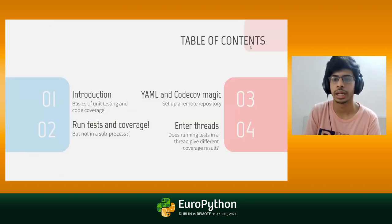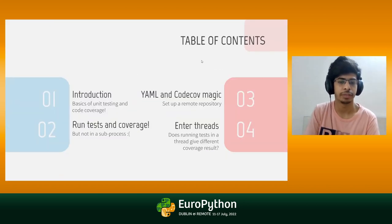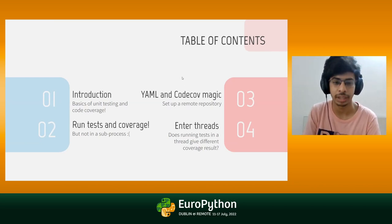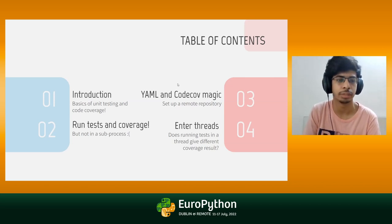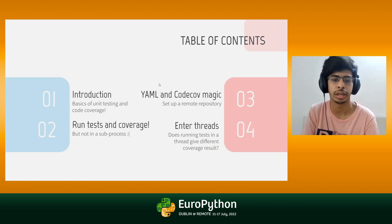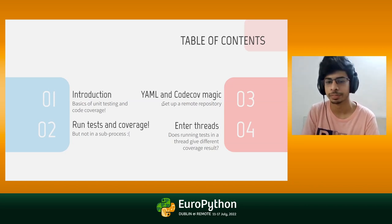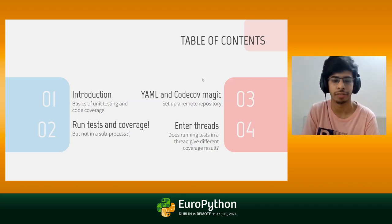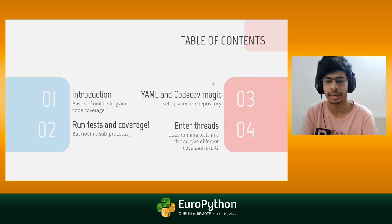Going through the table of contents: I will start with the introduction covering basics of unit testing and code coverage, then running tests and code coverage but not in a subprocess yet. Then we will be configuring a complete pipeline, including some YAML and some code magic, which would automate everything — every test and the code coverage values. Then we'll start working with threads and run these tests inside a thread to see if that affects code coverage or not. I don't want to spoil it for you.